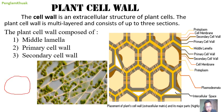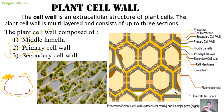The cell wall is outside the cells and is made up of multiple layers: number one is middle lamella, number two is primary cell wall, and number three is secondary cell wall. The secondary cell wall is the innermost, followed by primary cell wall, and then the middle lamella is outermost.